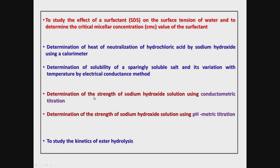The next two experiments are two titration experiments. One is a conductometric titration, the next one is a pH metric titration. You are going to use a third method of titration in a last experiment where you are going to measure the rate of a chemical reaction, and while measuring the rate you are going to use the volumetric titration.